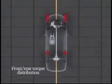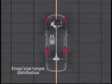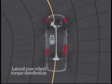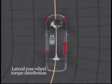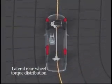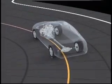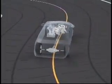SHAWD varies front-rear torque distribution within a range from 70:30 to 30:70. Lateral torque distribution to the rear wheels is controlled within a range from 0:100 to 100:0. Simultaneous and continuous control over both factors ensures that the optimum amount of torque is always distributed to each of the four wheels.